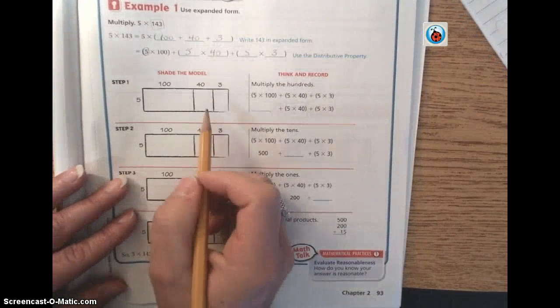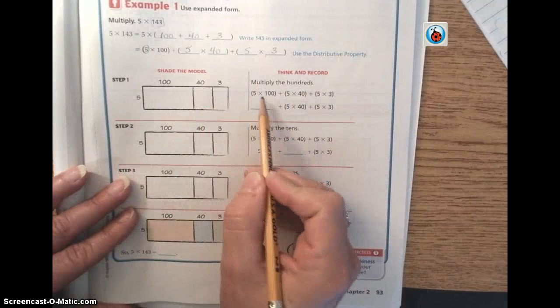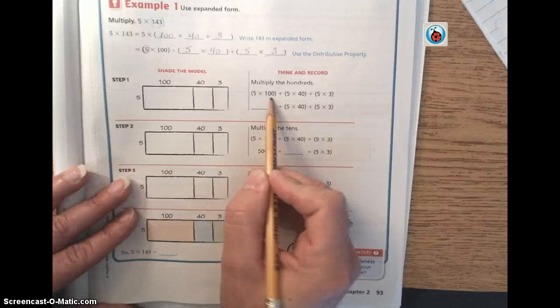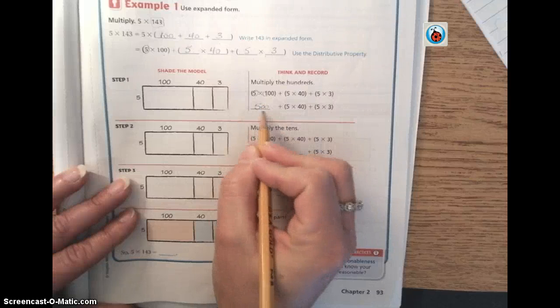So if we go down to the model, follow along with me, please. We're going to first multiply the hundreds. So 5 times 100, using mental math, we know that 5 times 1 is 5, add our zeros, so we know that's 500.